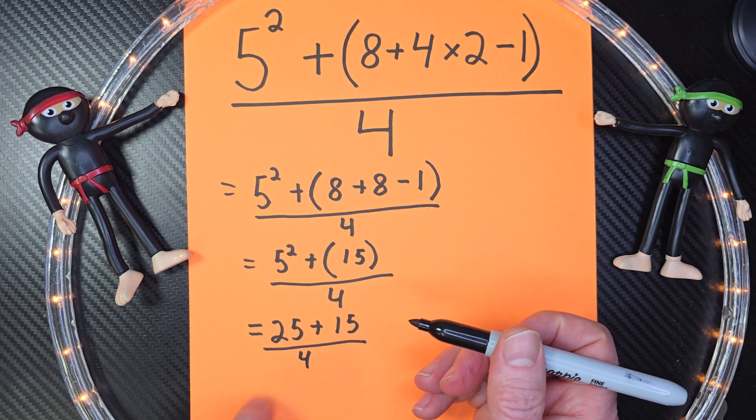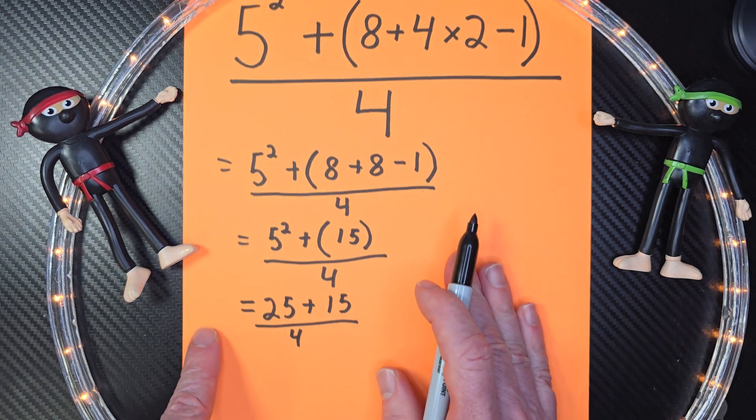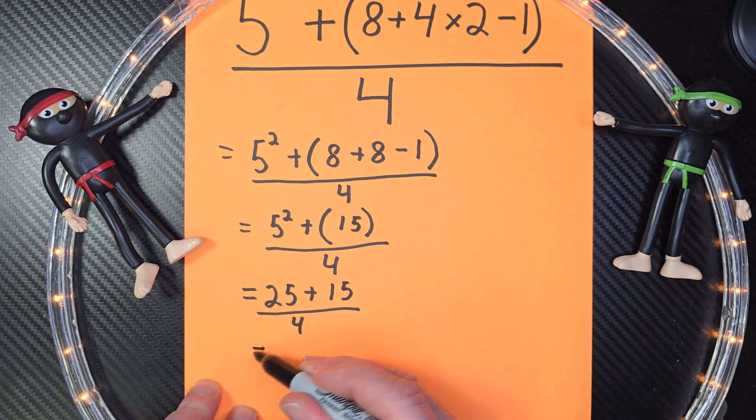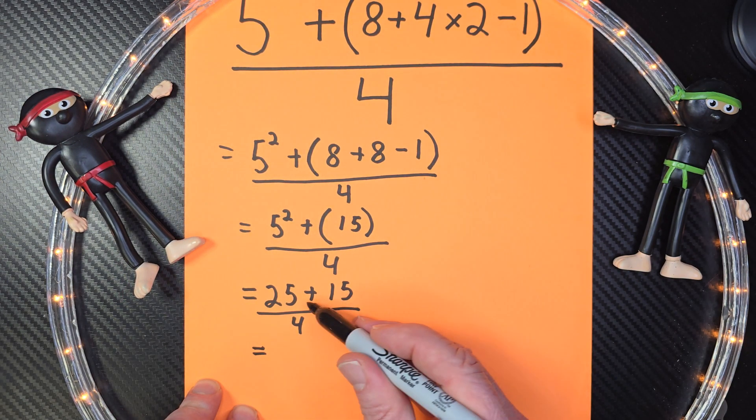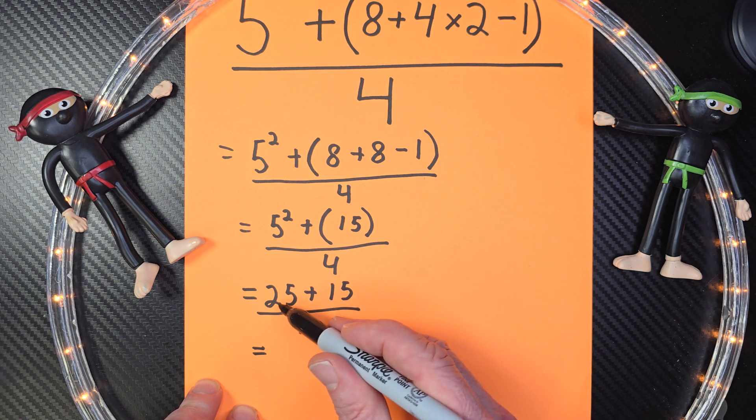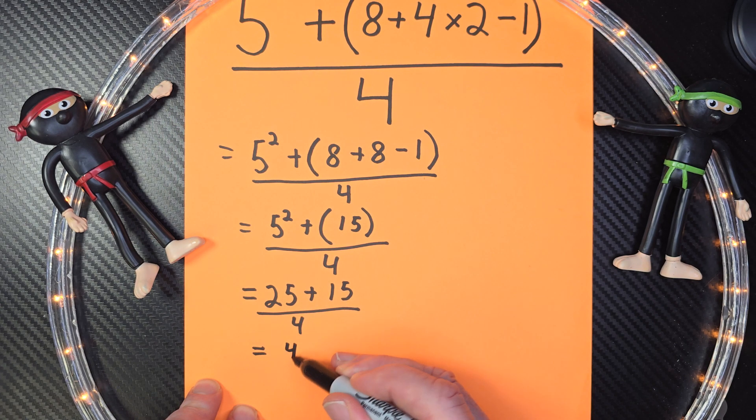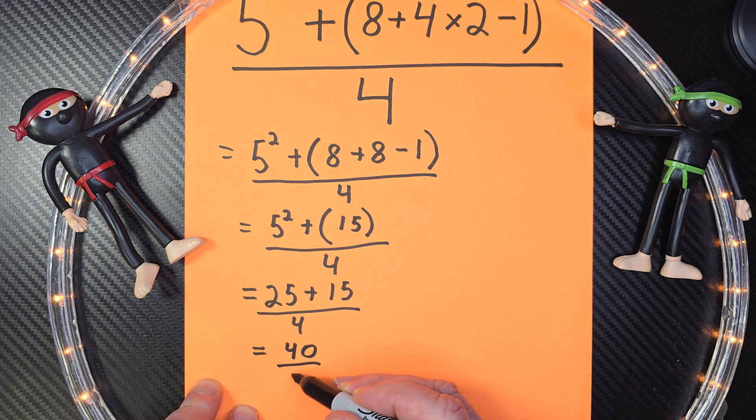So now let's go ahead and add this. I'm going to bring this paper up just a little bit right here. So 25 plus 15, what is that? 5 and 5 is 10, carry the 1. So it'd be 2, 3, and 4. So this would be 40 over 4.